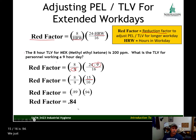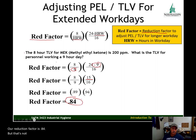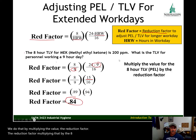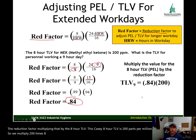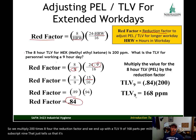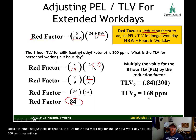Now we multiply these together: our reduction factor is 0.84. But that's not our adjusted TLV — we need to use the reduction factor to make the adjustment. We do that by multiplying the reduction factor by the 8-hour TLV. In this case the 8-hour TLV is 200 parts per million, so we multiply 200 times 0.84 and end up with a TLV-9 of 168 parts per million. If you have workers working 9 hours with methyl ethyl ketone, this would be their exposure limit.